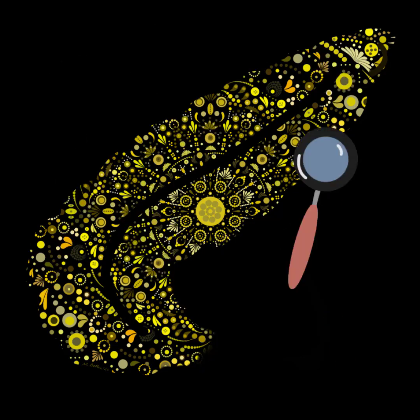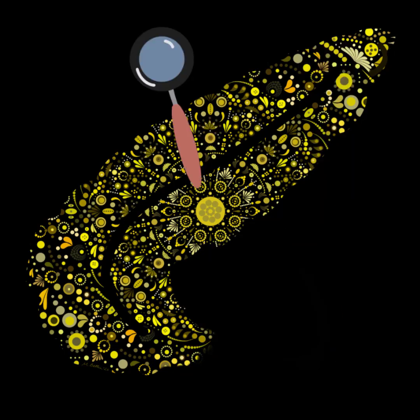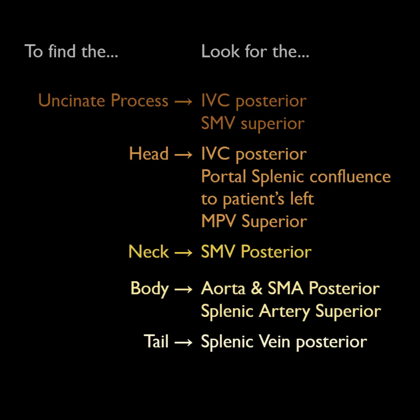You'll want to assess for masses, cysts, echogenicity, and dilation of the main duct. When the pancreas is obscured by gas, it can be really helpful to identify the more easily seen midline vessels. Knowing how the pancreas is related to the vascular landmarks will allow your eye to find the pancreas tissue. Take a look at this chart covering the basic vascular landmarks to help identify pancreatic sections.